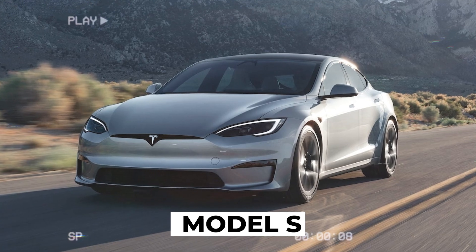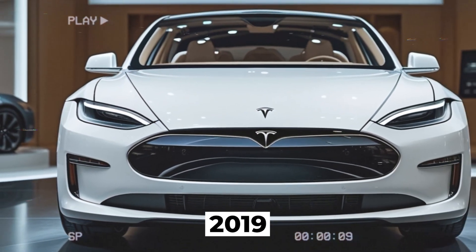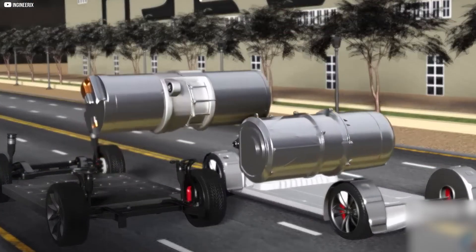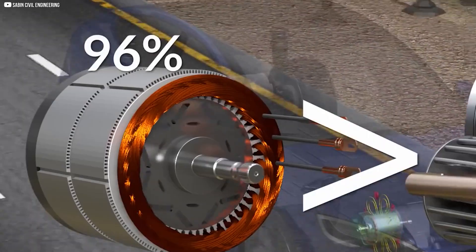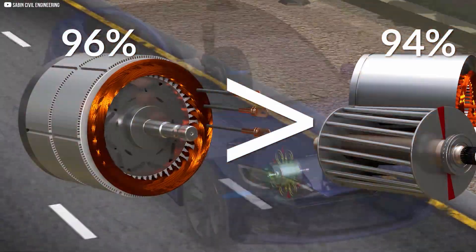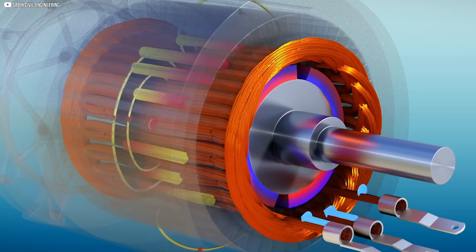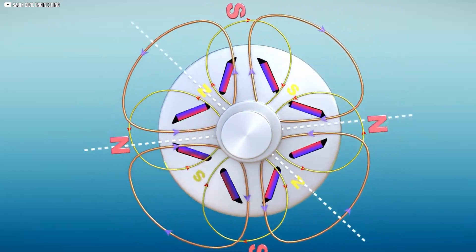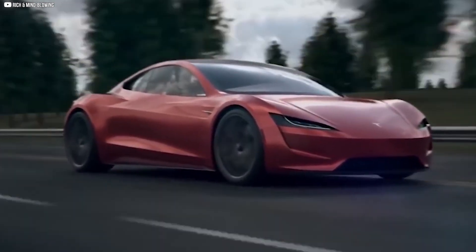What about the Model S? Since 2019, Tesla has updated the Model S with IPM-SYN-RM motors on the front axle. These newer motors achieve efficiencies as high as 96%, compared to about 94% for the older induction motors. Plus, because IPM-SYN-RM motors do not generate large currents inside the rotor, cooling them is much easier, leading to more consistent performance during aggressive driving.